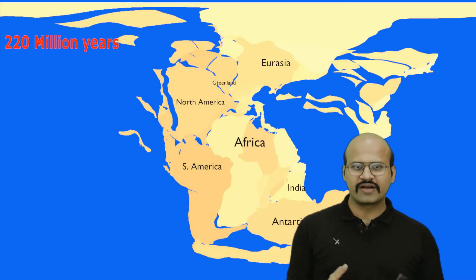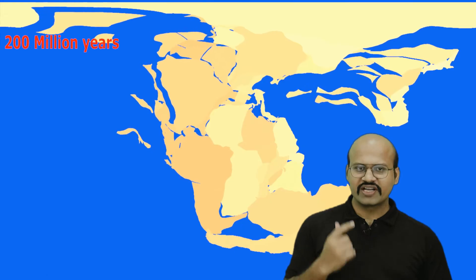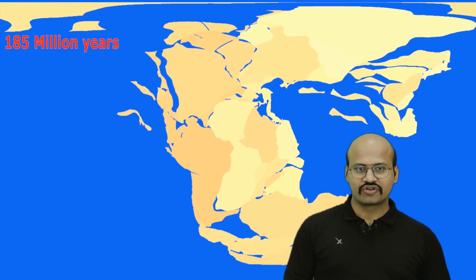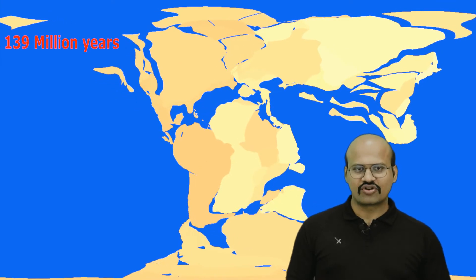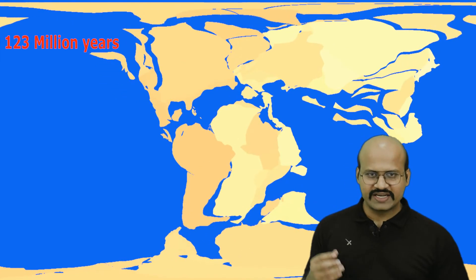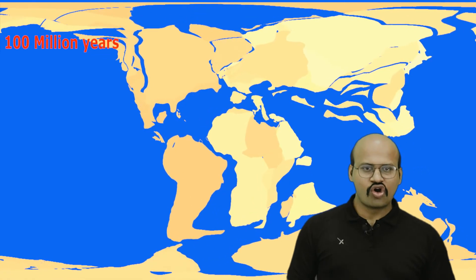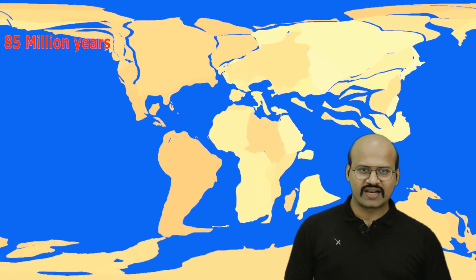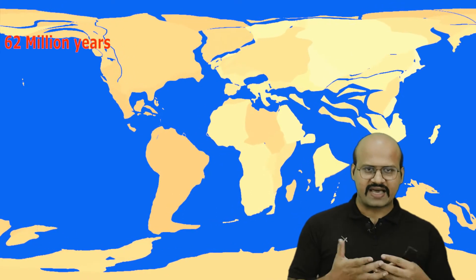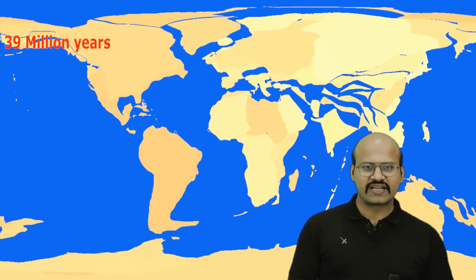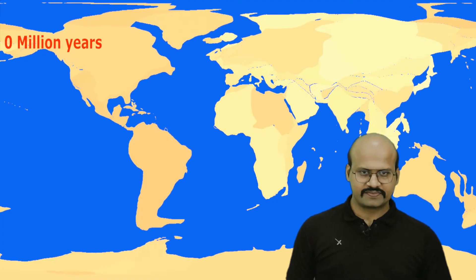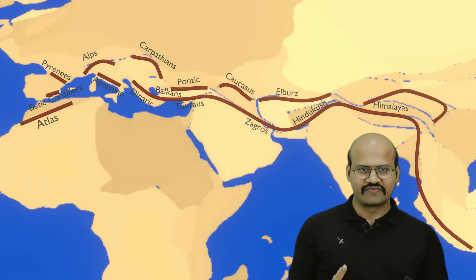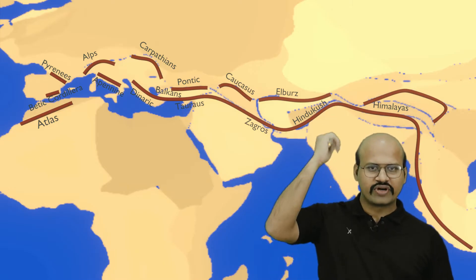Around 200 million years ago all the continents were one continuous landform called Pangaea. Slowly, due to the movement of plates, all these land masses got separated from each other. Our Indian plate, which was part of Gondwana land, also got separated and started to move in the northern direction. This movement continued until our Indian plate collided with the Eurasian plate, and because of this collision we see the Himalayan mountains at their boundary.